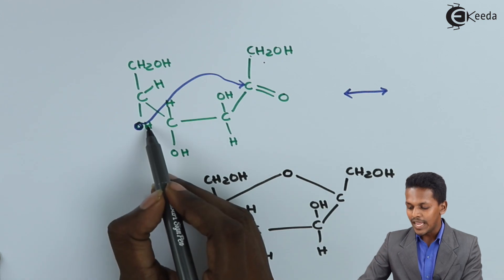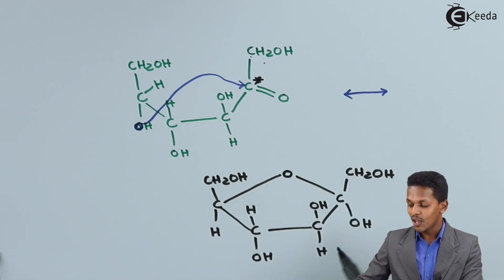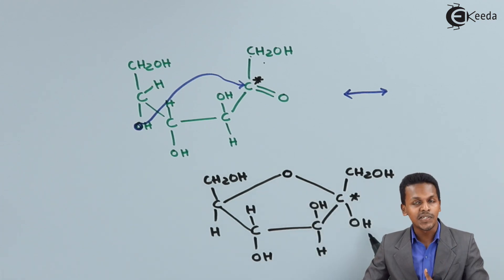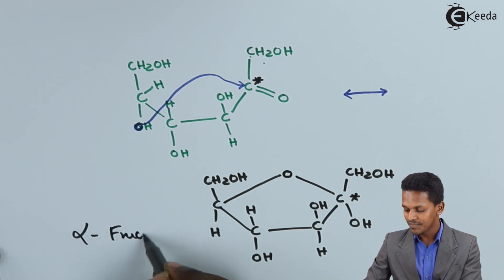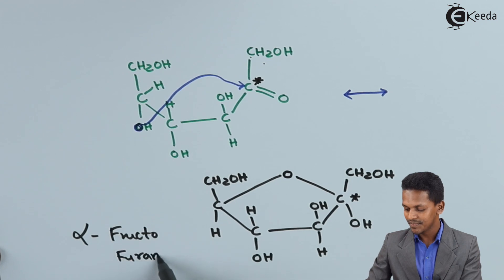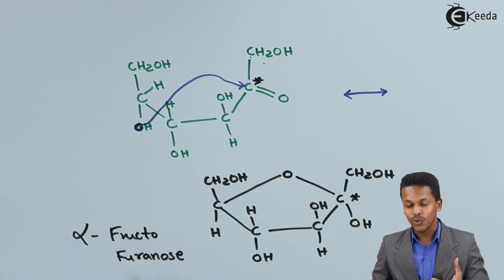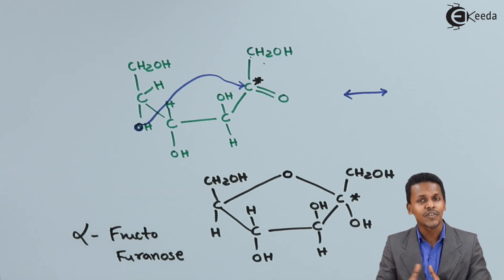Regarding the anomeric carbon: if the OH attached to the anomeric carbon (carbon 2) is pointing downwards, this is called alpha-fructofuranose. If the OH is on the upper side and the CH2OH is on the lower side, then this is called beta-fructofuranose. This is how we draw the cyclic structure, which is the Haworth projection formula of fructofuranose.